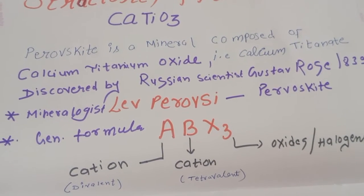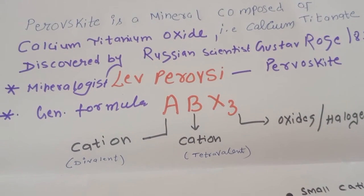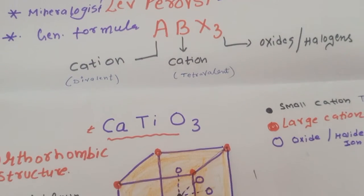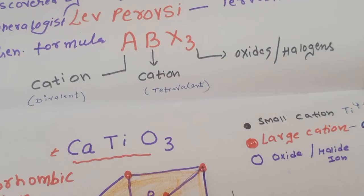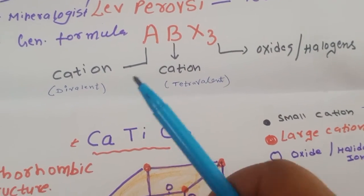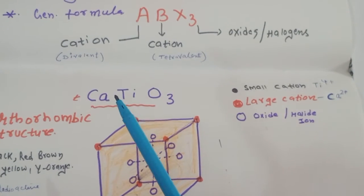They have the general formula ABX3, so ABX3 means A will be also a cation, B will also be a cation. But the difference is that if we see the formula of our CaTiO3, there are two cations. Calcium is also a cation and titanium is also a cation.